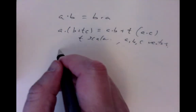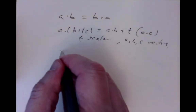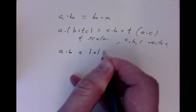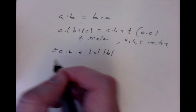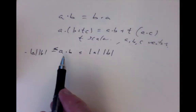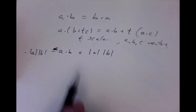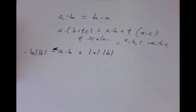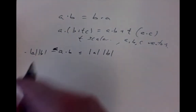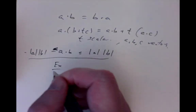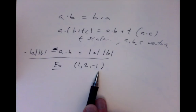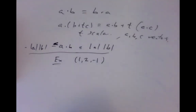Another elementary fact, following from the cosine formula, is that the dot product never exceeds the product of the lengths, and never goes below the negative product of the lengths. That is: −|a||b| ≤ a dot b ≤ |a||b|. This is because the dot product equals the product of the lengths times a cosine, and cosine is always between −1 and 1.